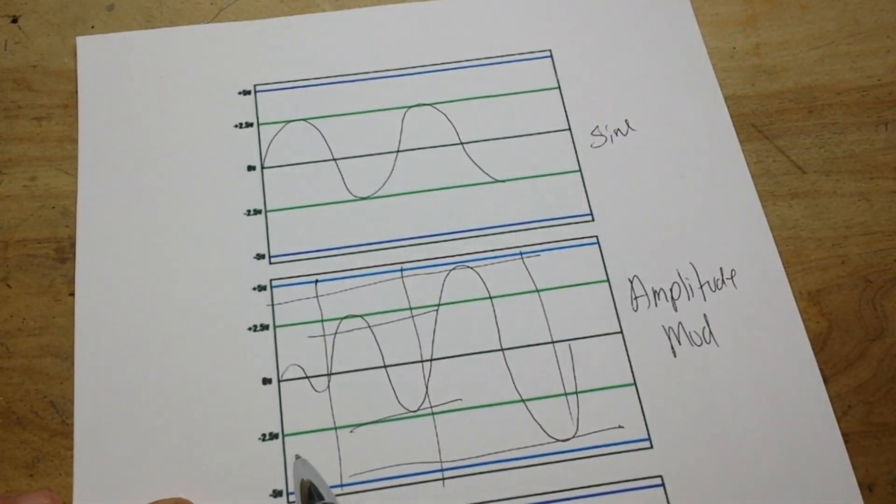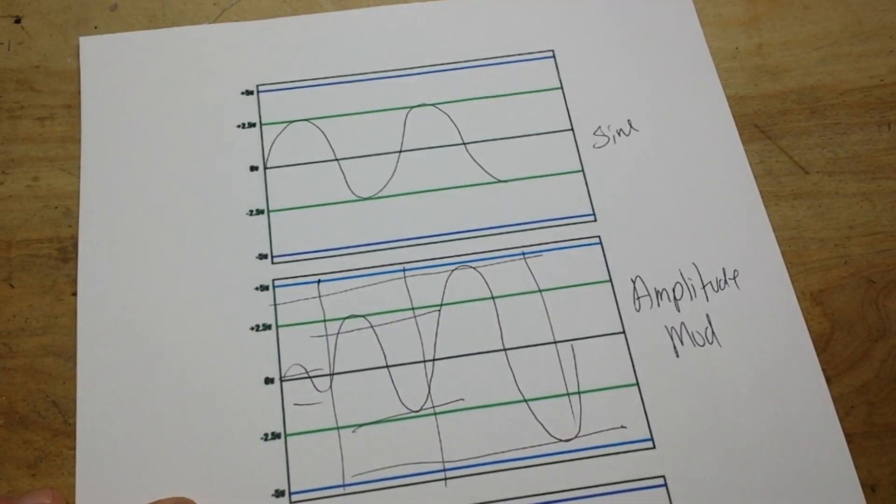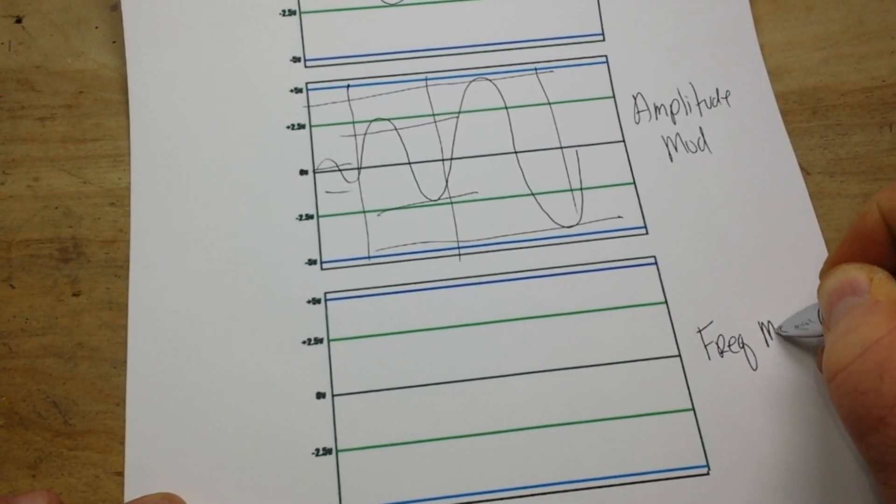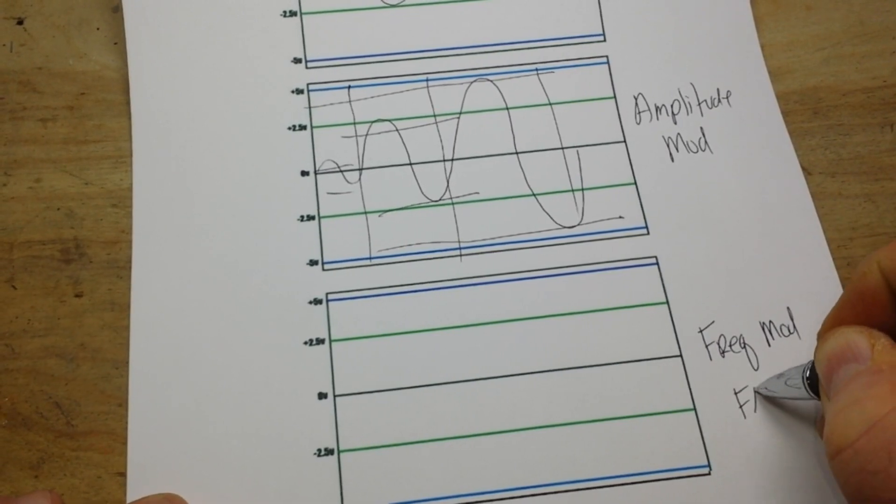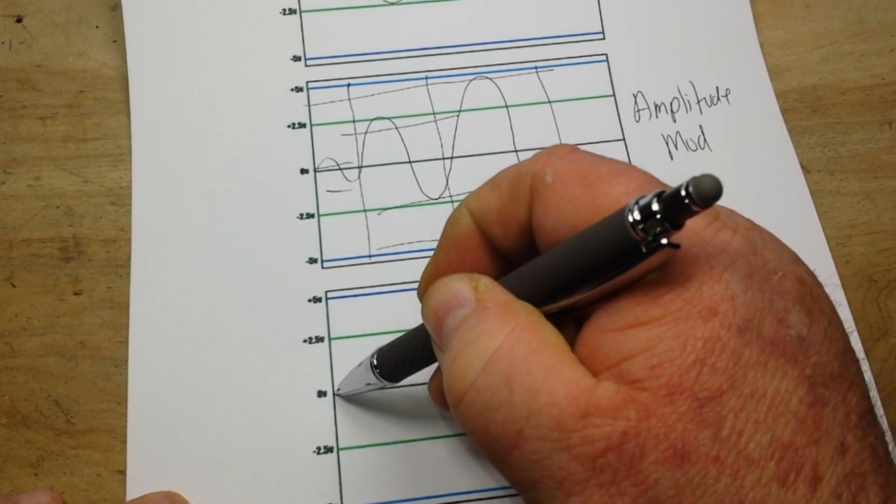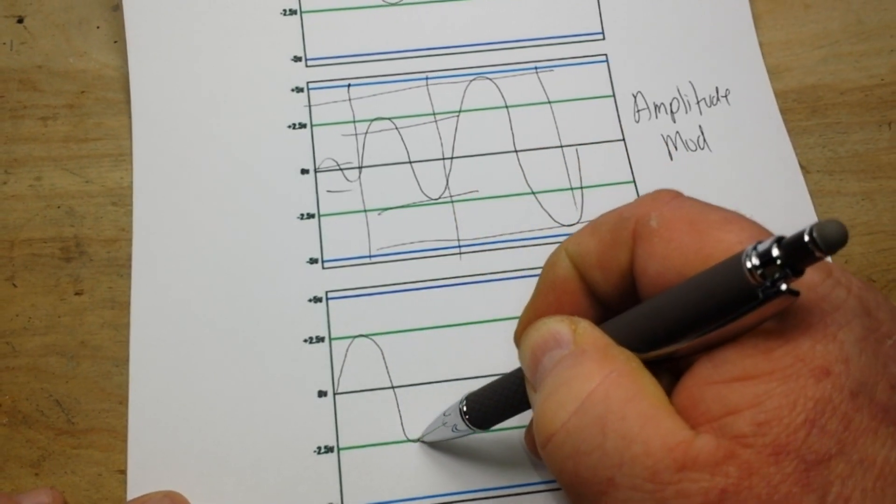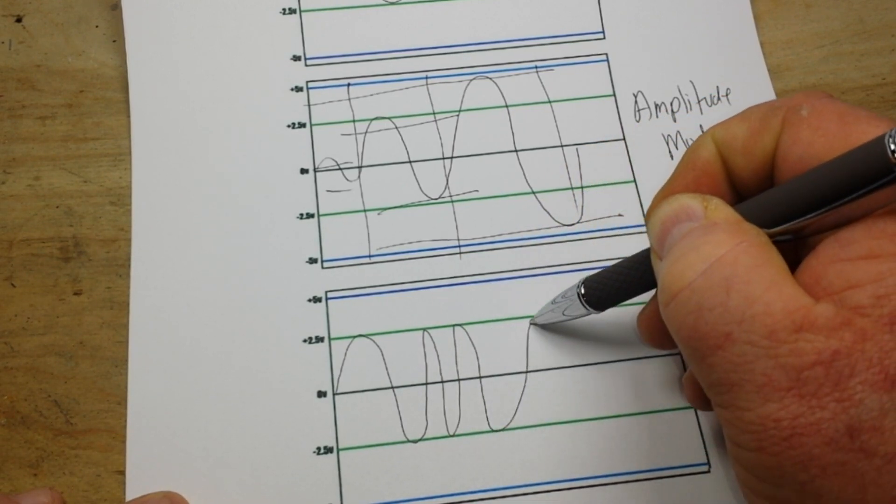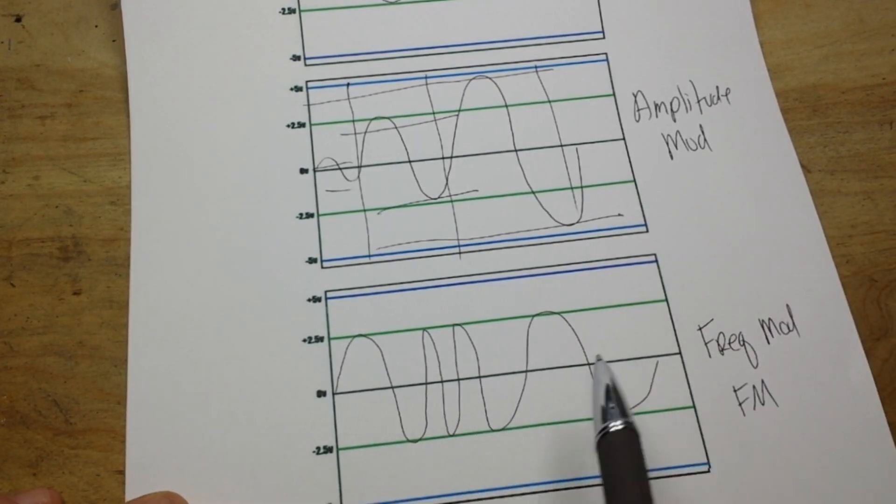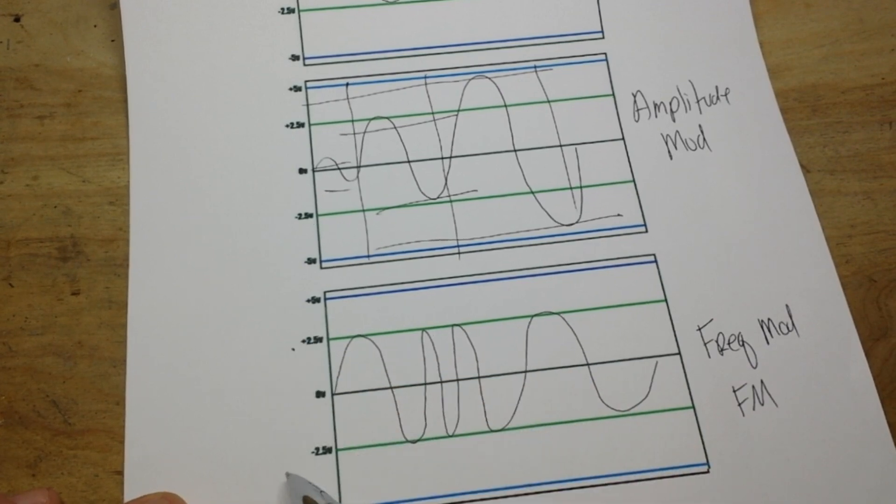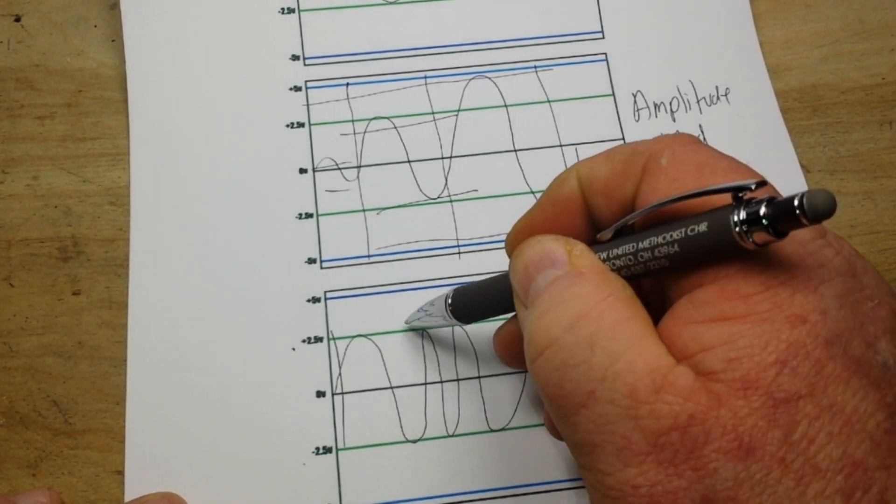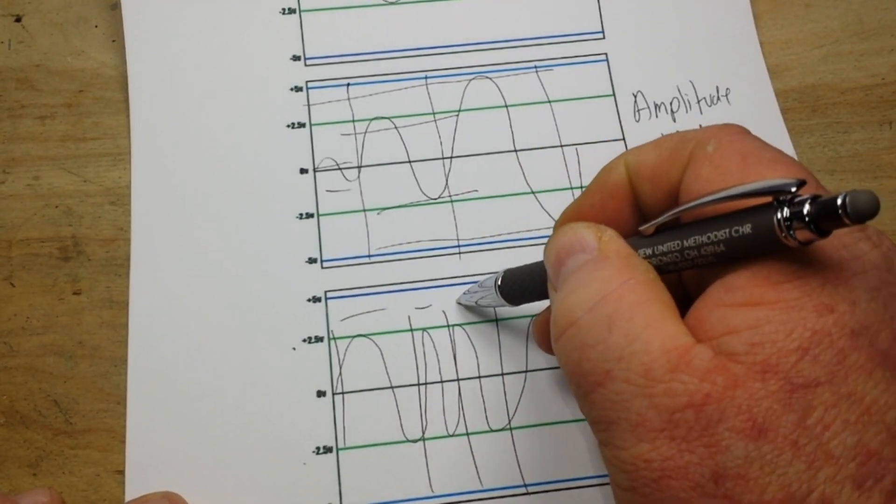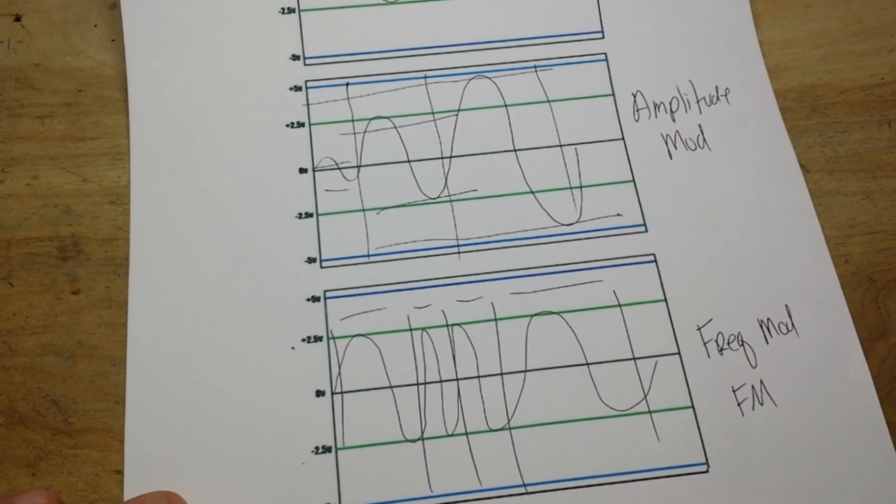And then we also have frequency modulation or FM. In that case, our sine wave amplitude remains the same, but our frequency changes. You see the amplitude has never changed, we have plus 2.5 volts to minus 2.5 volts. What has changed is the period of those waves. You see a difference here: small, little bit bigger, extremely large. And that is frequency modulation.